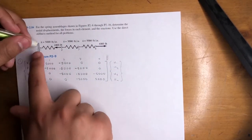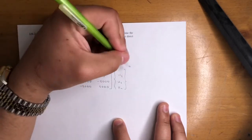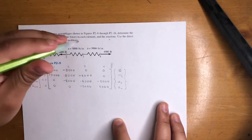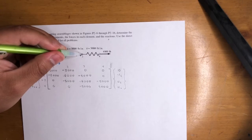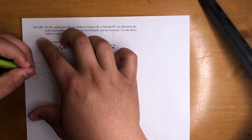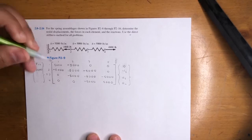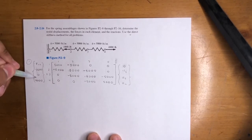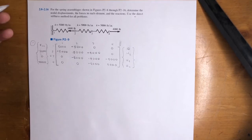Let's go into the boundary conditions. Node 1 is not going to move at all, so this displacement will always be 0, no matter how much force you put at any other node. Node 2 is going to move, node 3 is going to move, and node 4 is going to move. We know all the force values: this is negative 1,000 pounds at node 2, 0 pounds at node 3, and 4,000 at node 4. And then we're looking for F1. If you know the force, you're looking for the displacement, and if you know the displacement, you're looking for the force — that's the trick.